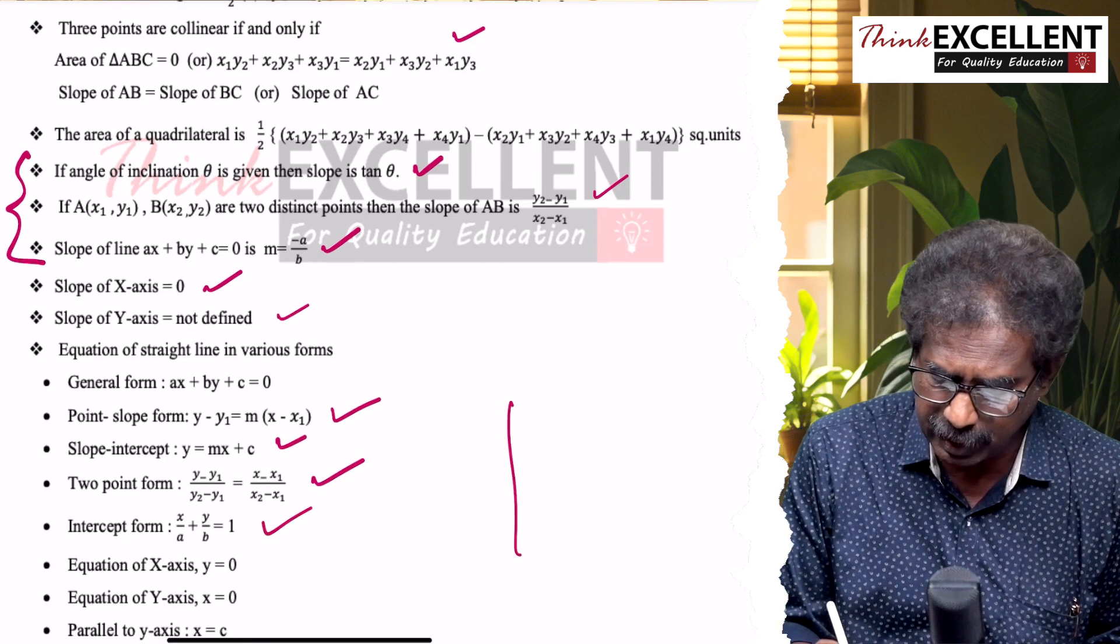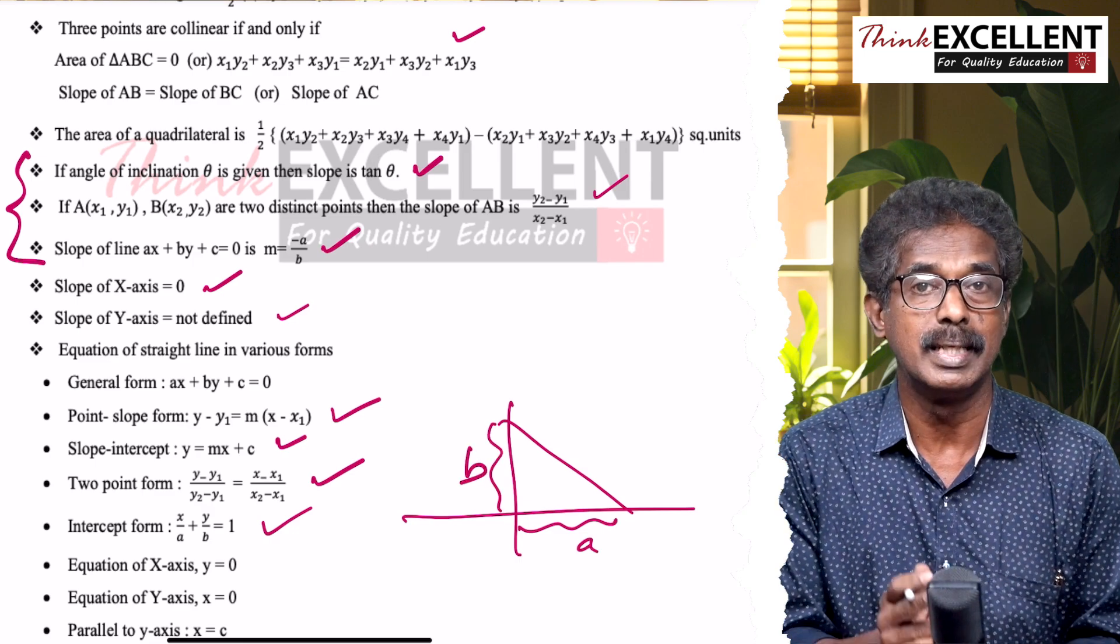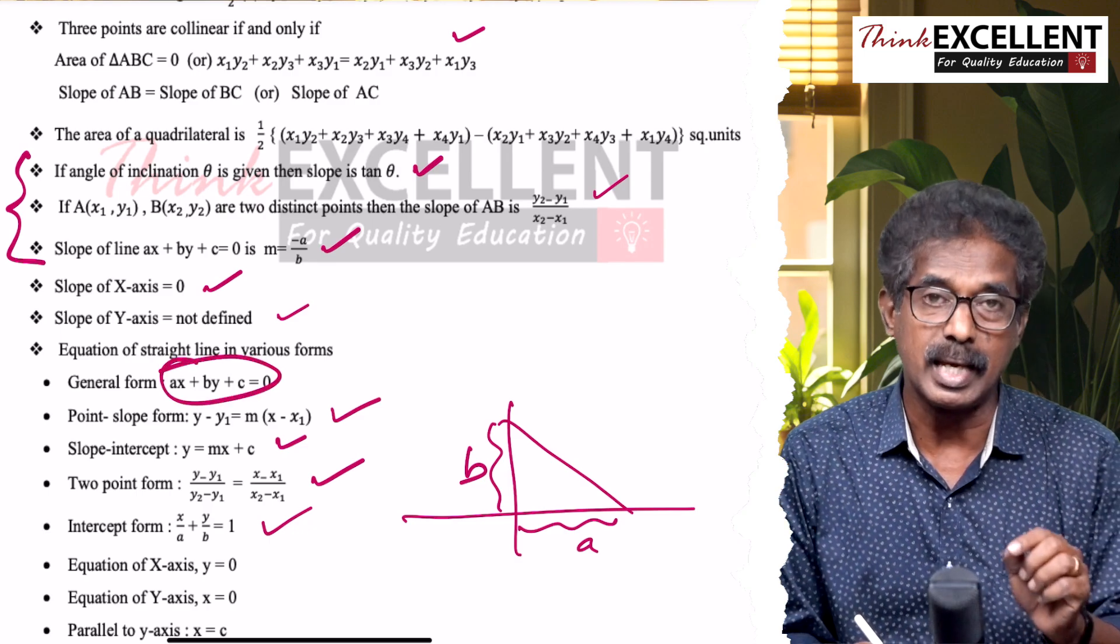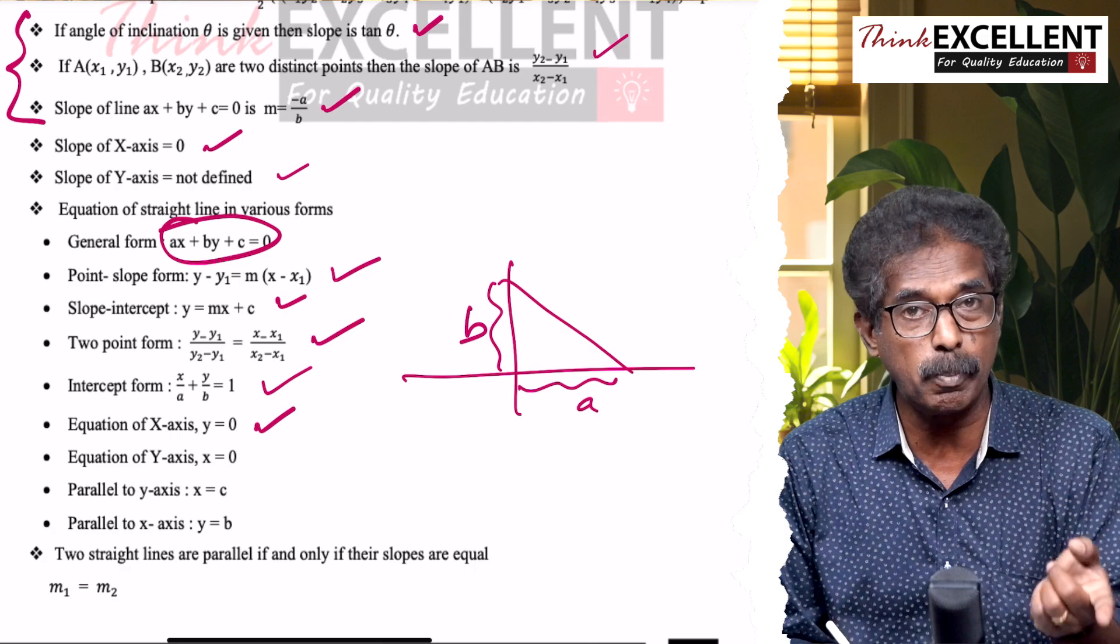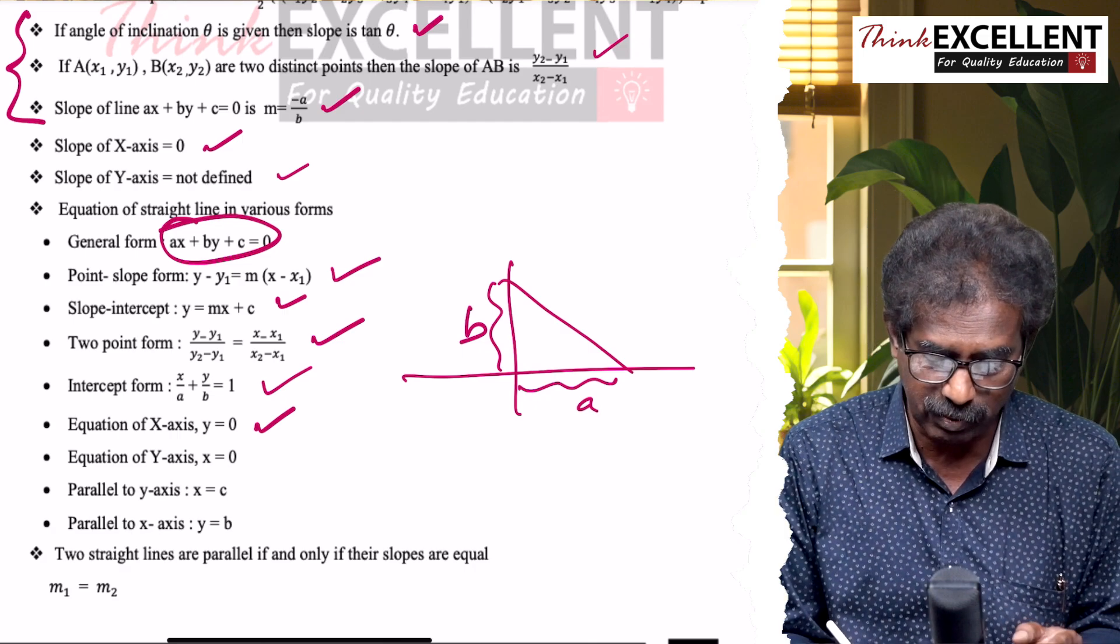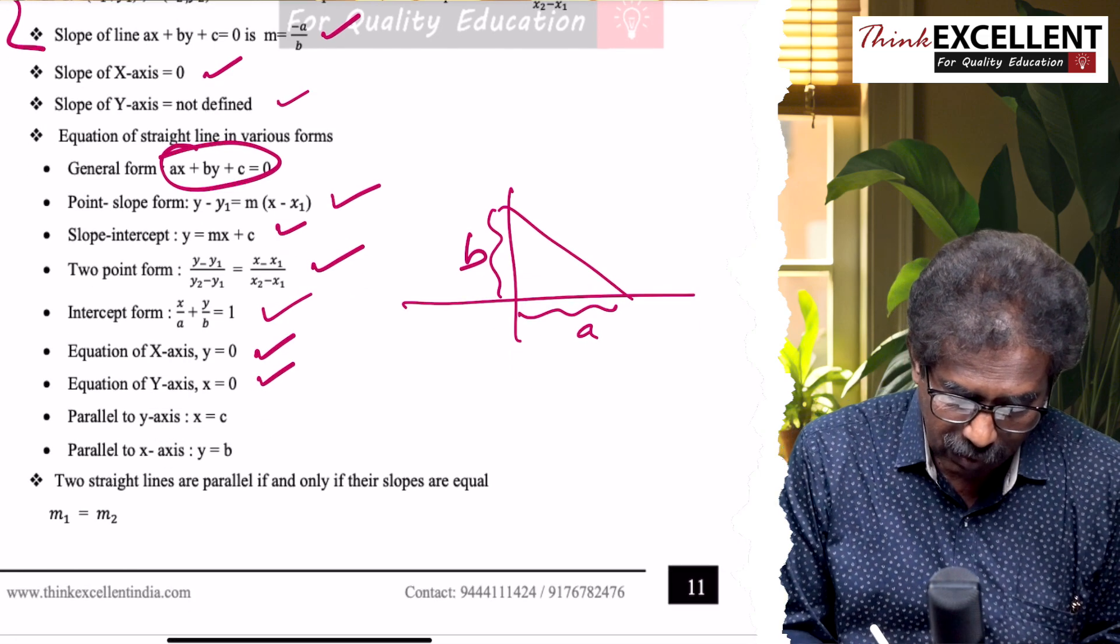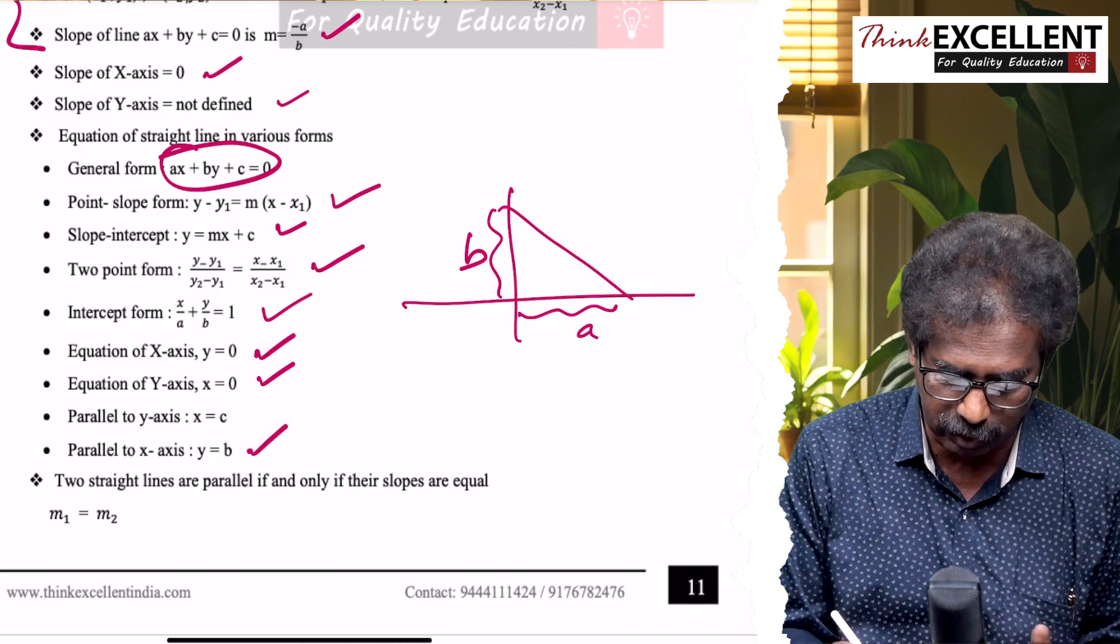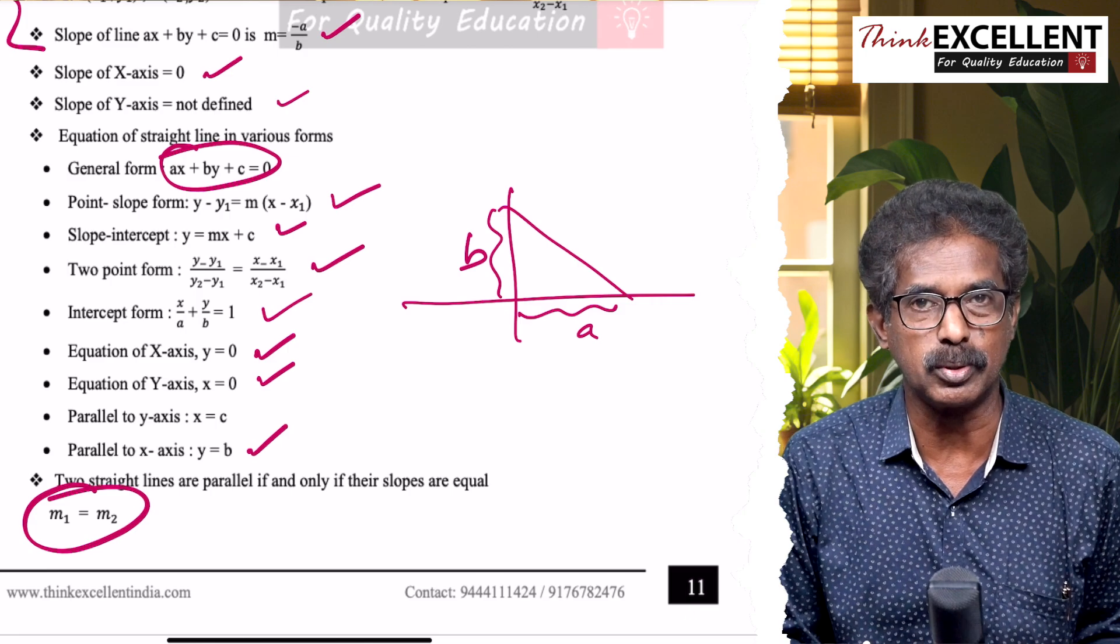Two point form: (y−y1)/(y2−y1) = (x−x1)/(x2−x1). Intercept form: when they give both intercepts, x-intercept is a and y-intercept is b, if you know both: x/a + y/b = 1. General form of the line: ax+by+c = 0. Equation of x-axis: y = 0. Equation of y-axis: x = 0. Equation of a line parallel to x-axis: y = constant. Parallel to y-axis: x = constant. Line parallel: m1 = m2. Perpendicular: m1×m2 = −1.